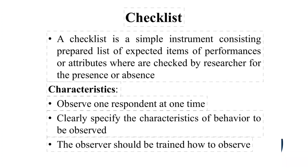Characteristics of a checklist: it is administered to one respondent at a time. It clearly specifies the characteristics or behaviors to be observed — for example, you only need to observe whether skin preparation has been done or not. The observer should be trained on how to observe; they must first understand all the aspects and items in the checklist before administering it.